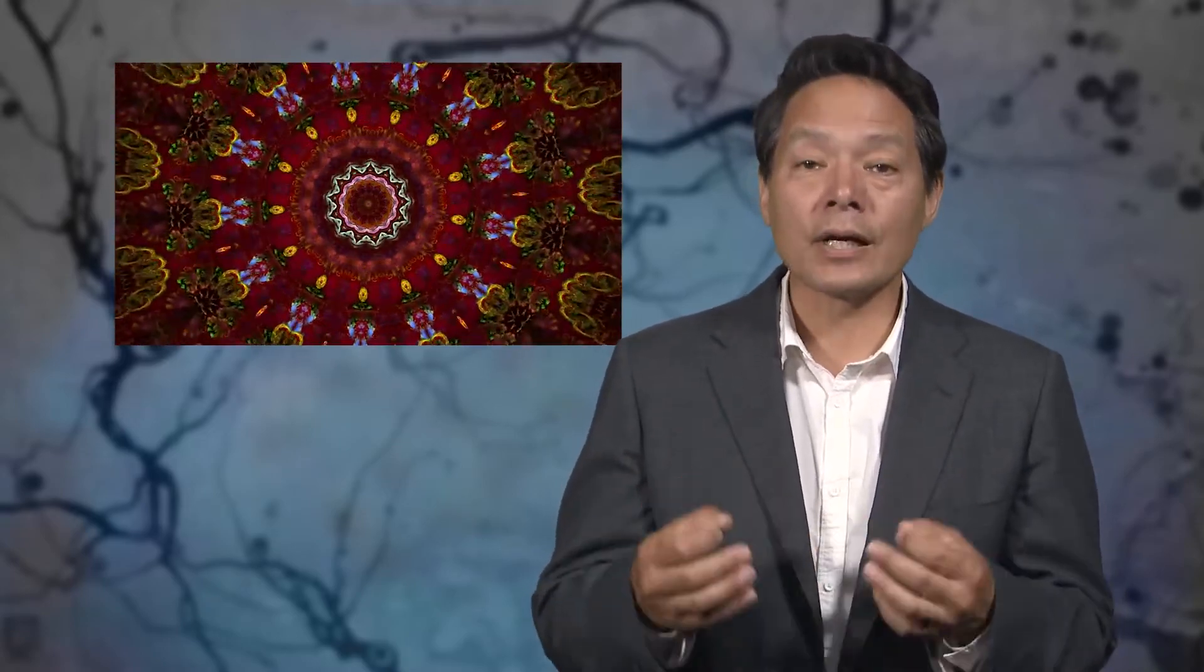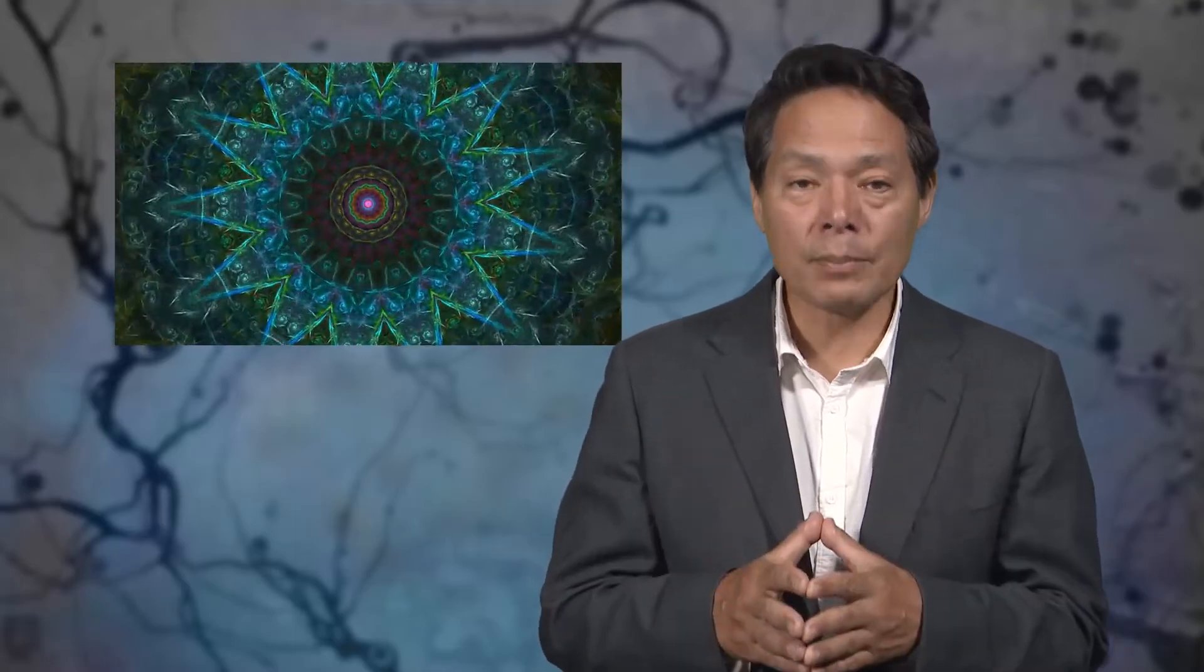Coincidence detection therefore allows neurons to respond to relationships among material inputs. By coming to encode arbitrary relationships among light, sound, heat, or vibration energy detected locally at the sensory sheet, neurons make explicit information about such relationships that are only implicit in the sensory input.